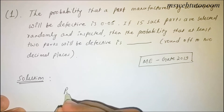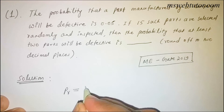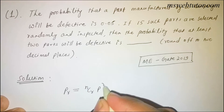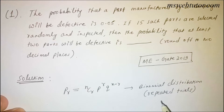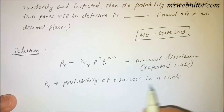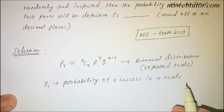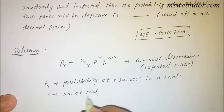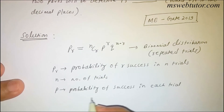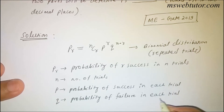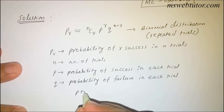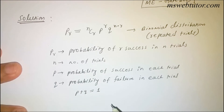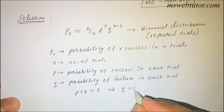For binomial distribution, the probability of r successes in n trials formula is: nCr × p^r × q^(n−r). This is called binomial distribution, used for repeated trials. Here, n is the number of trials, p is the probability of success in each trial, and q is the probability of failure in each trial. Since total probability is 1, p + q = 1, so q = 1 − p.